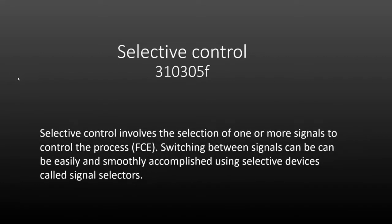the last module in process controls. Selective control, for those who have never seen it, involves a selection of one or more signals to control the process or the final control element. Switching between signals can be easily and smoothly accomplished using selective devices called signal selectors.